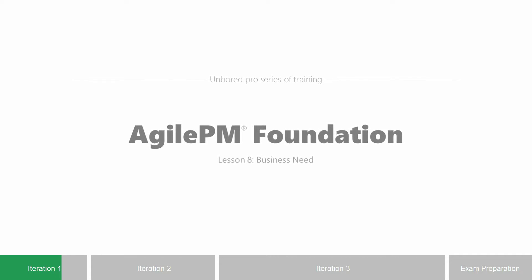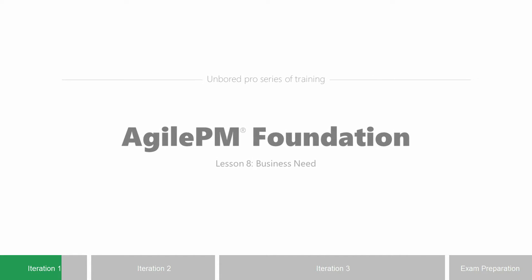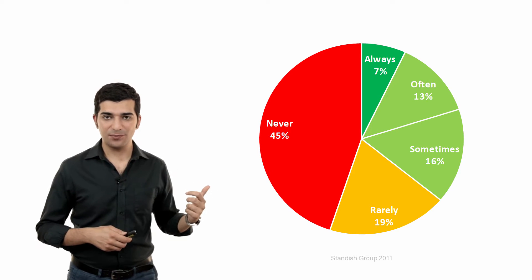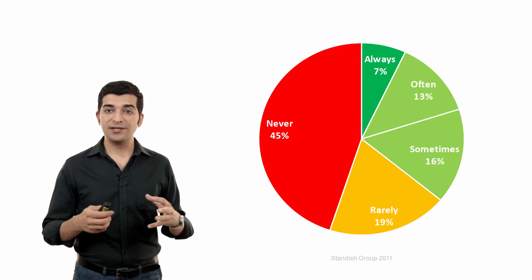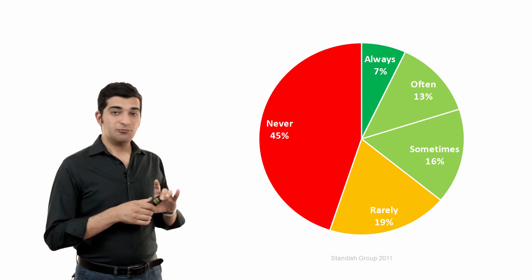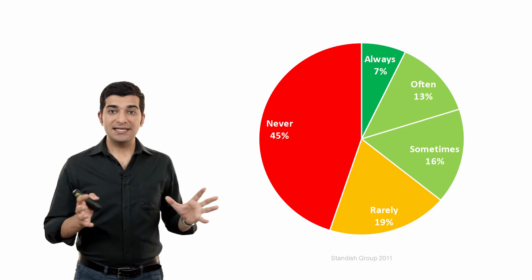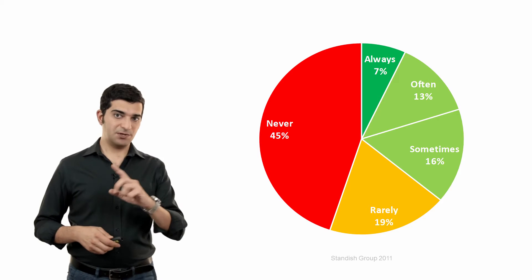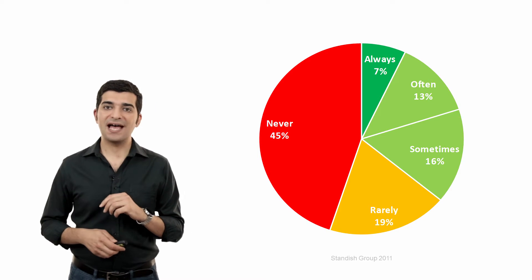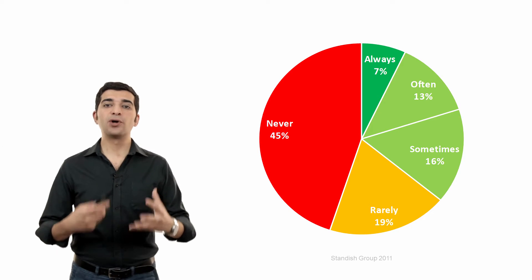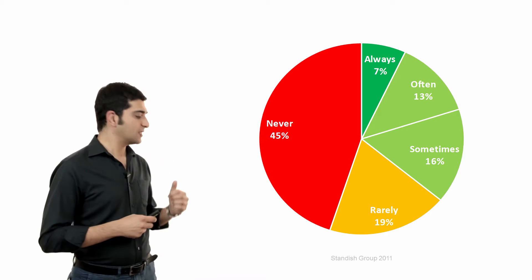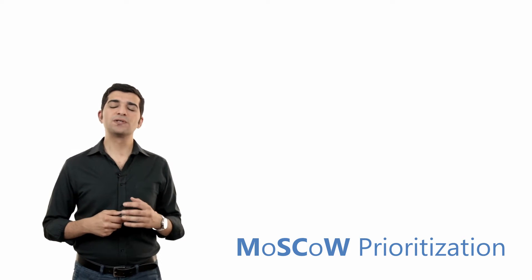Agile PM Foundation Lesson 8: Business Need. I mentioned this common disaster in our projects and asked about your ideas on how we can reduce or completely remove this problem. One of the ways we can do that — and it works very well especially when you combine it with Agile systems — is the use of a proper prioritization method. One of the best we have is the MoSCoW prioritization, which belongs to DSDM but we also use it in other systems.